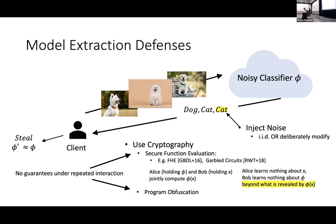Another option is to use cryptography. One example, not a direct application but related, is secure function evaluation. In secure function evaluation, Alice holds a model and Bob holds an input, and they jointly compute the output of the model on that input while each learns nothing beyond what's revealed by the output. This is great for one instance but doesn't address repeated interaction. Similarly, program obfuscation doesn't help because it won't modify the underlying functionality, so extraction remains possible.